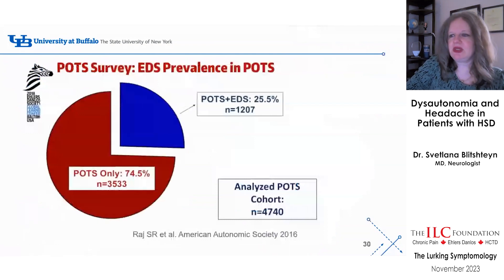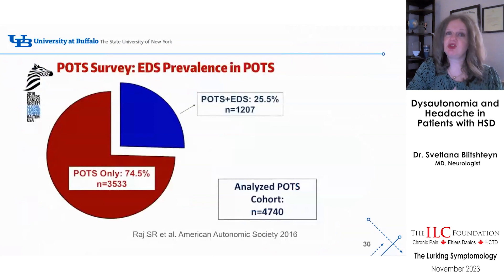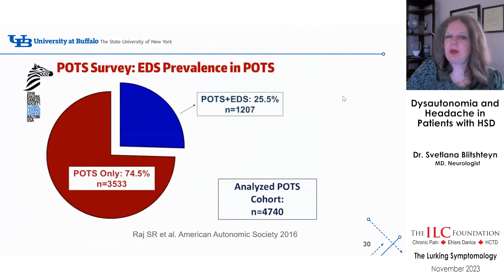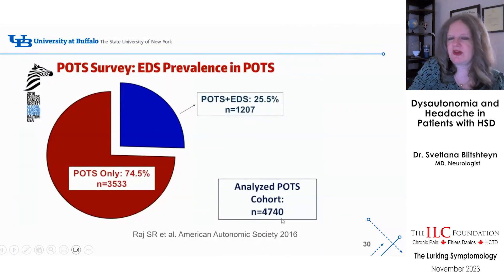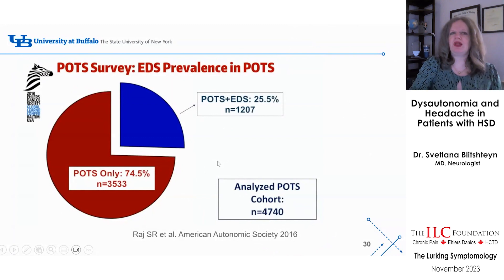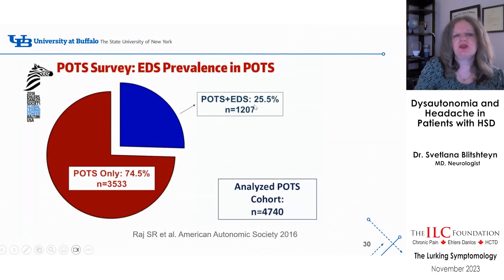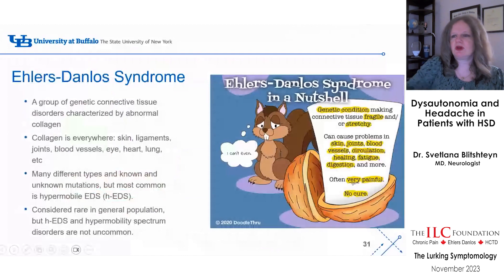My colleague Dr. Raj's study on the prevalence of Ehlers-Danlos syndrome and POTS found that at least 25.5% in a sample of nearly 5,000 POTS patients in an online survey had both conditions. I suspect there are even more, because you can be hypermobile and not know it — for example, having frequent ankle dislocations without significant joint pain and not realizing you have hypermobility. This is likely the minimum number we see.